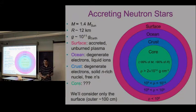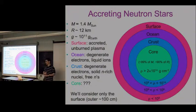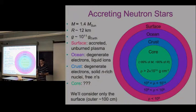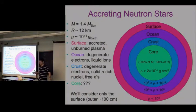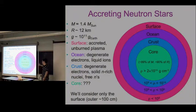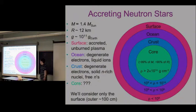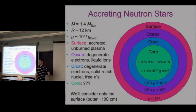A typical neutron star has a mass of roughly 1.4 solar masses and a radius of maybe 12 kilometers. Something that compact has an extremely large gravitational force at its surface - the gravitational acceleration is about 10^11 times greater than on Earth. The outermost layer I'll call the surface, constituting only about a meter or so, consisting of the accreted matter from the donor star - basically ionized matter.